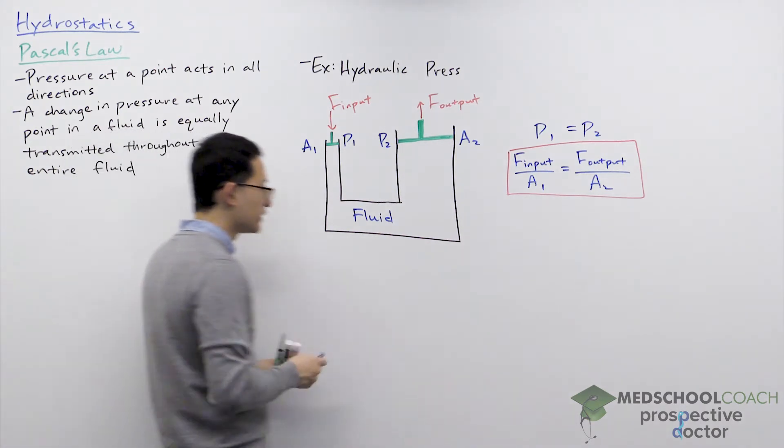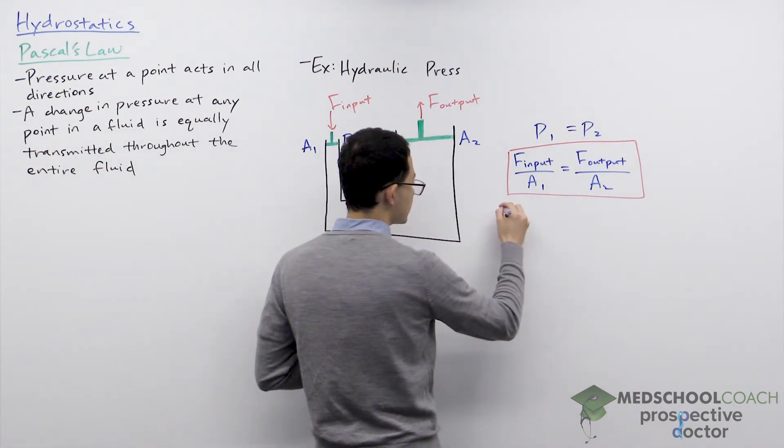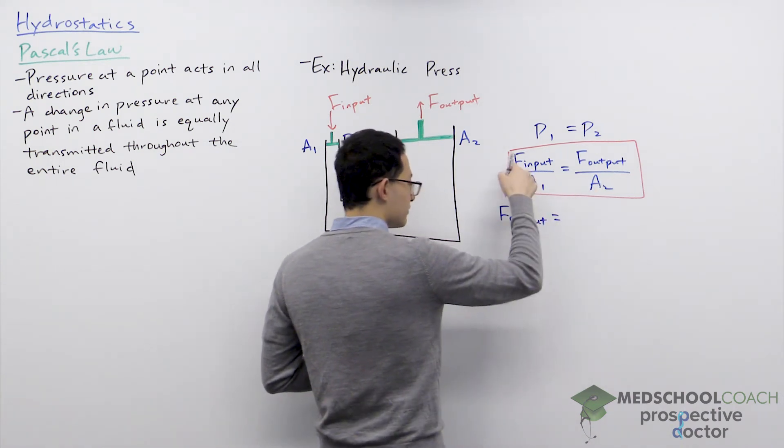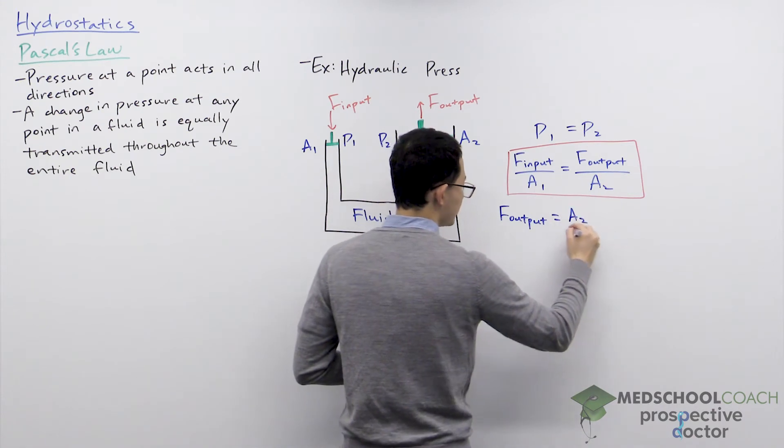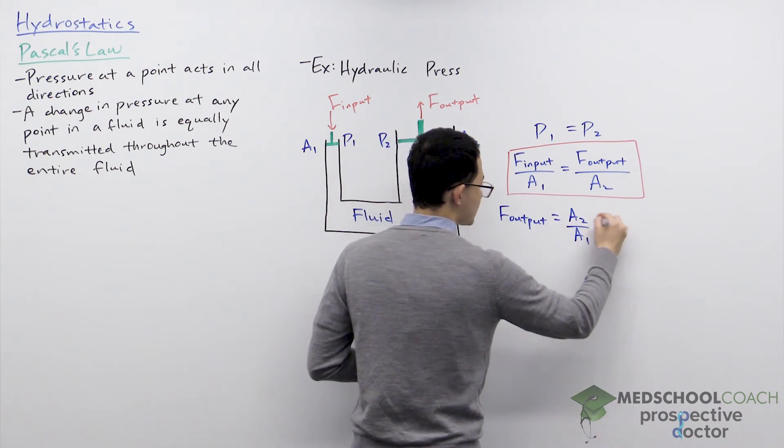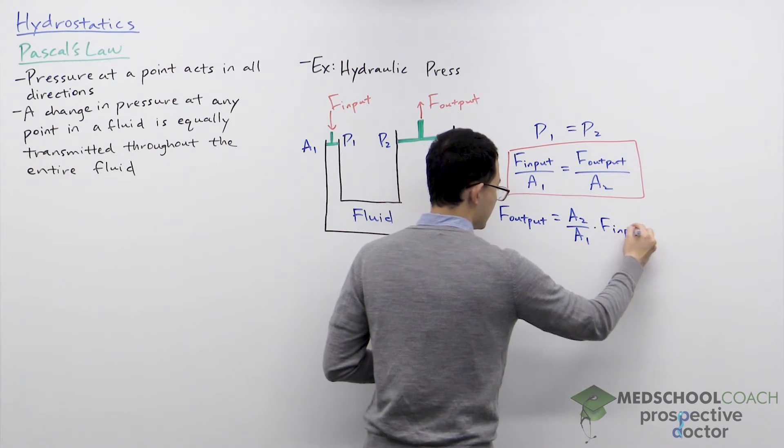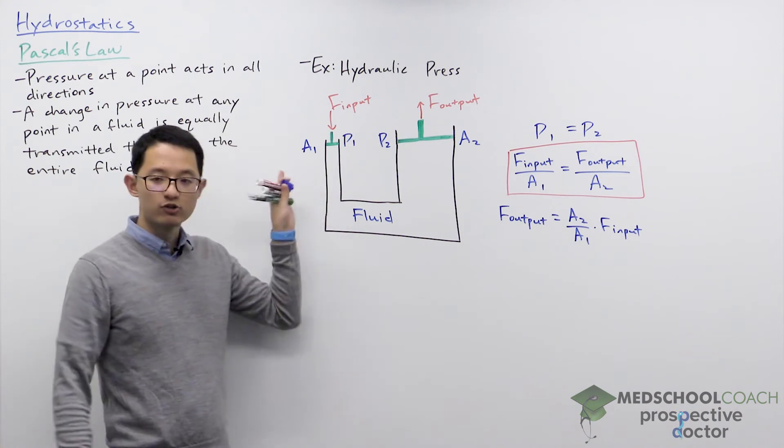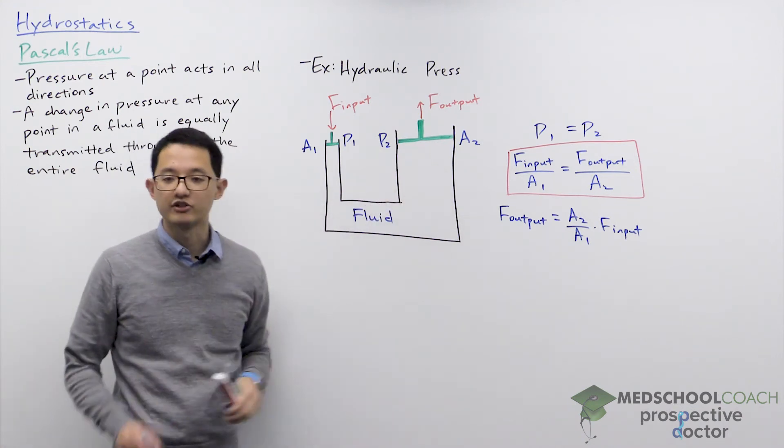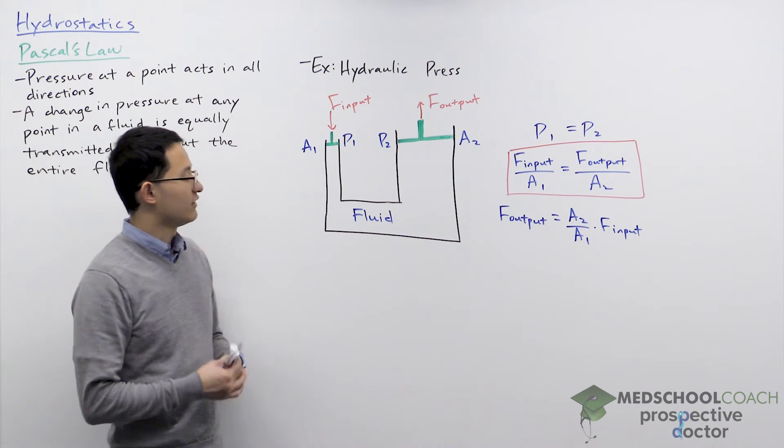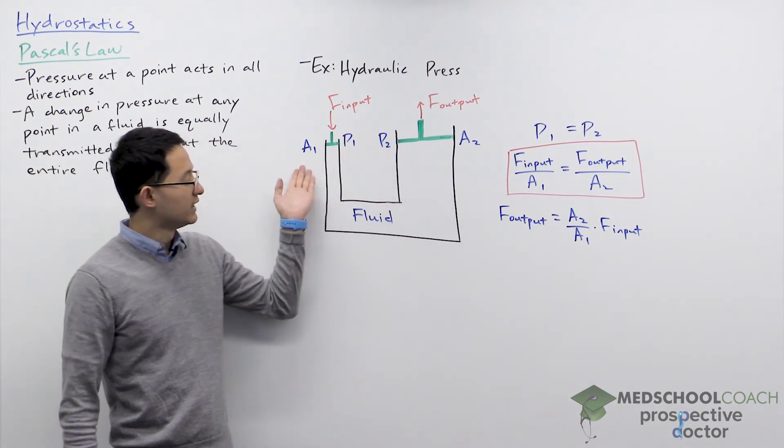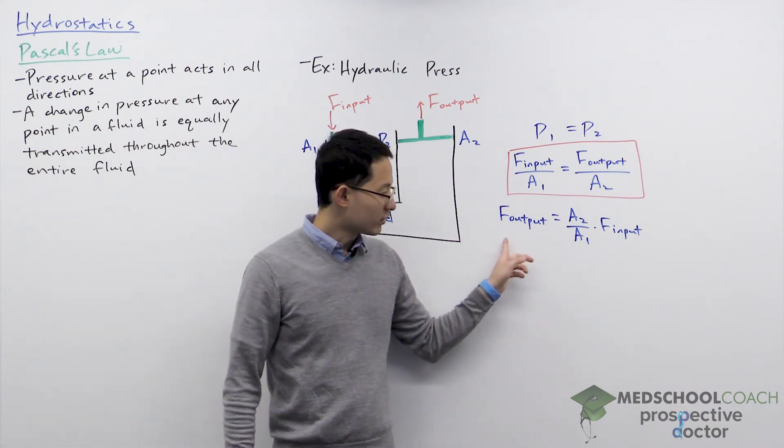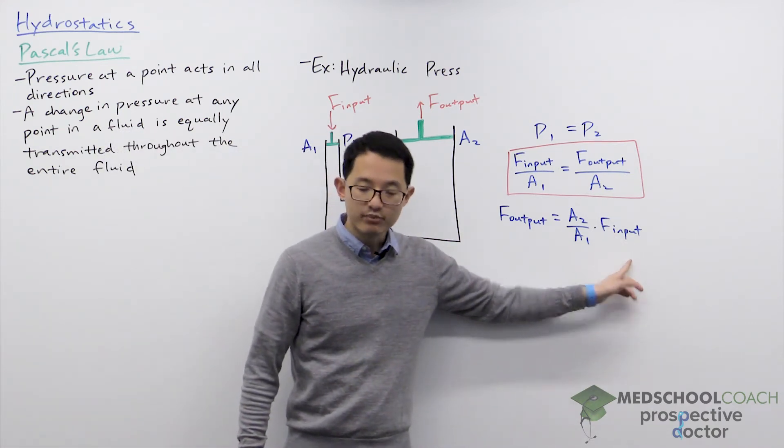In fact if we rearrange this equation we can solve for the output force. The output force is actually going to be equal to A2 over A1 times the input force. So A2 over A1 you notice is going to be greater than one, right? A2 is much larger than A1. So if the area was four times larger at the larger piston than the smaller piston, then the output force is going to be four times greater than the input force.